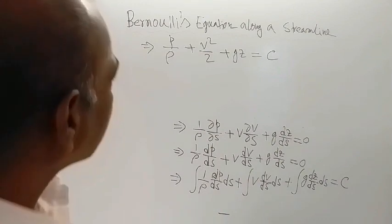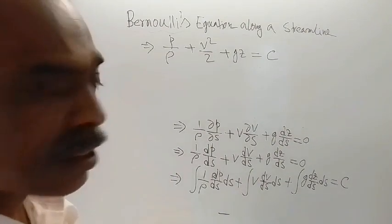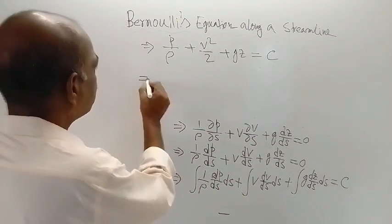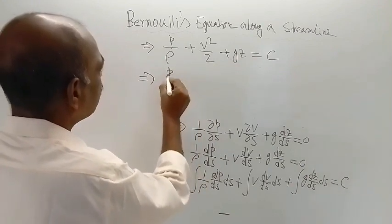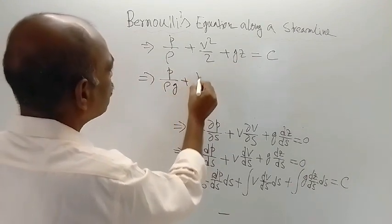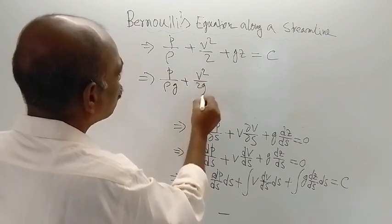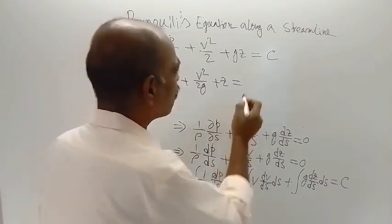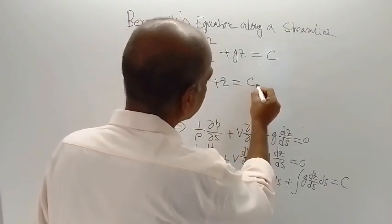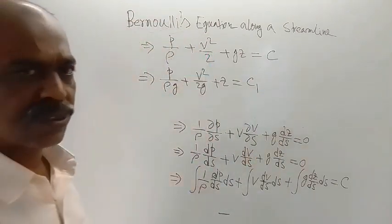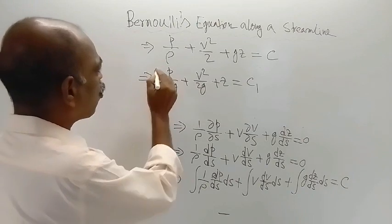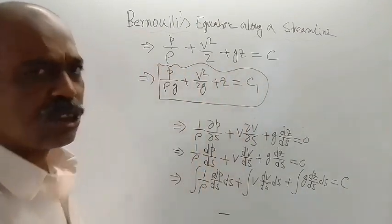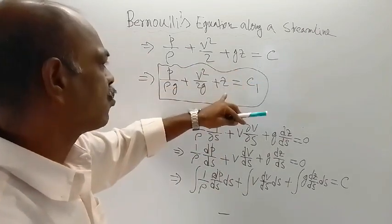The same equation can also be written in another form. Dividing both sides by G, we get: P by rho g plus V squared by 2g plus z equals another constant C1. Both forms are used, but in most cases the first form — P by rho plus V squared by 2 plus Gz equals constant — is used as Bernoulli's equation. It is your choice which form you want to use.